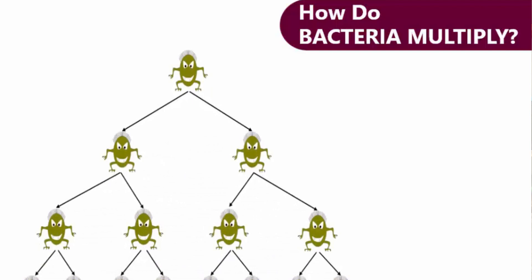As we all know, bacteria is unicellular — it contains only one cell. But in this case, the less-is-more strategy works. One bacterium divides into two cells through a process called binary fission. Unfortunately, bacteria is asexual, meaning it doesn't require any partner to grow. It divides into two cells through binary fission.